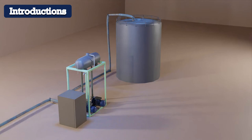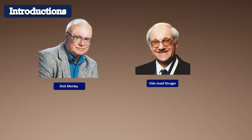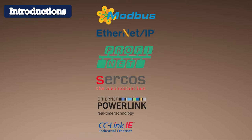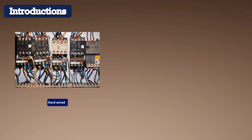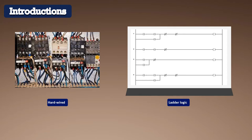Welcome to another informative video brought to you by OrTruo. Last time, we looked at how PLC came to be. The work of Dick Morley and Joseph Struger was discussed extensively. We also looked at the various communication protocols in industrial automation. In this series, we will be looking at relay logic — the similarities between a hardwired relay logic and a PLC ladder rung will be discussed in detail.